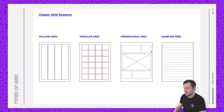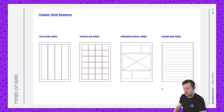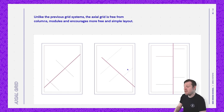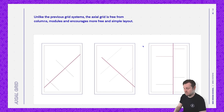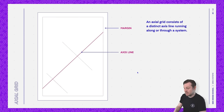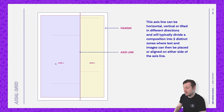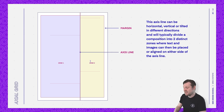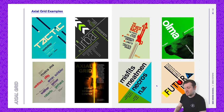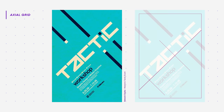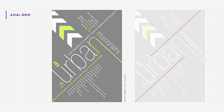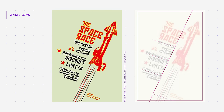There are some other grids to consider for more alternative layout approaches. The axial grid, unlike previous grid systems, is free from technical columns and modules and encourages a more free and simple layout. An axial grid consists of a distinct axis line running along or through a system. This axis line can be horizontal, vertical, or tilted in different directions, and will typically divide a composition into two distinct zones, where text and image can then be placed or aligned on either side.